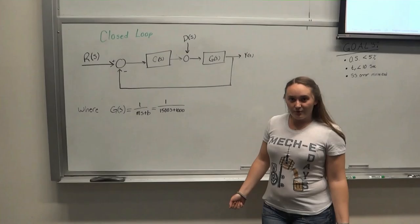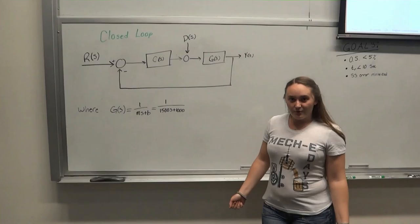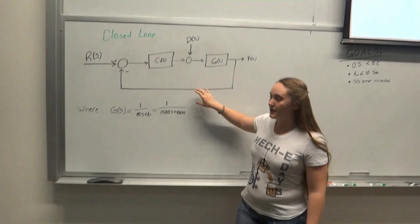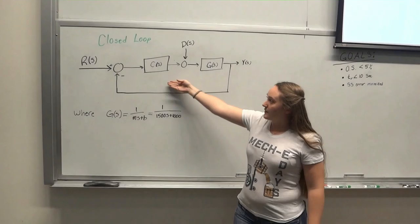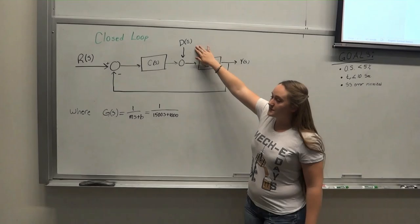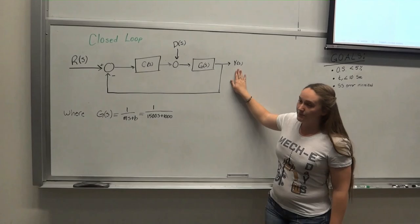So after we analyzed our open loop system, it's time to close the loop. That's what this feedback line is right here. This is our closed loop block diagram. As you can see, we have our input represented by rs. We have our controller, or what will be our controller once we determine what that is, as cs, a possible disturbance as ds, and our transfer function that we found previously as gs. Our output is y of s, and then this is our feedback, which is what closes that loop.